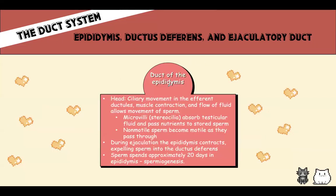The duct of the epididymis has a head, which has ciliary movement in the efferent ductules, and muscle contraction and fluid flow facilitate sperm movement. Microvilli absorb testicular fluid and pass nutrients to stored sperm, keeping them alive before ejaculation. Non-motile sperm become motile as they pass through the epididymis. During ejaculation, the epididymis contracts and expels sperm into the vas deferens. Sperm spend approximately 20 days in the epididymis — that is the process of spermiogenesis.